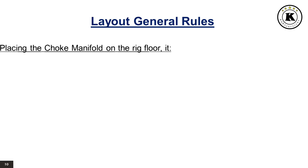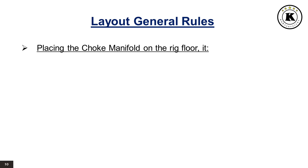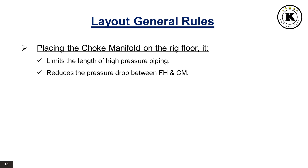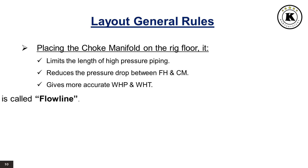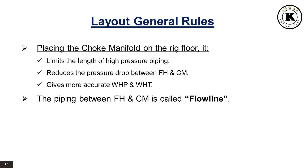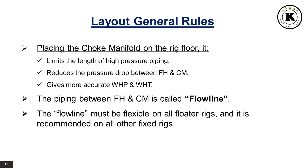Layout general rules: placing the choke manifold on the rig floor limits the length of high-pressure piping, reduces the pressure drop between the flowhead and choke manifold, and gives more accurate wellhead pressure and wellhead temperature. The piping between the flowhead and choke manifold is called the flowline. The flowline must be flexible on all floater rigs, and it is recommended on all other fixed rigs.